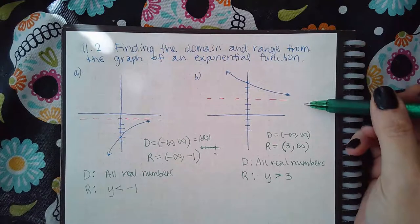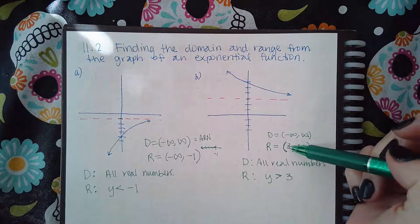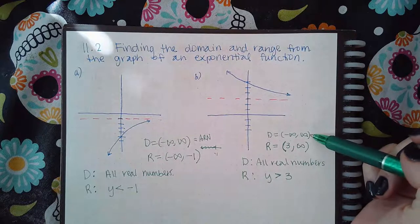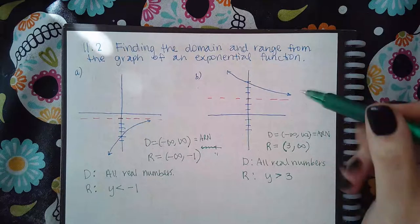Now for this other example, it does go to the left forever and to the right forever, so the domain is negative infinity to infinity just like it was before, which is the same as saying all real numbers.